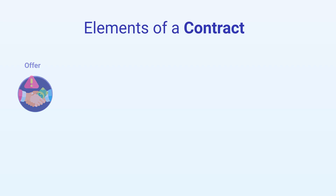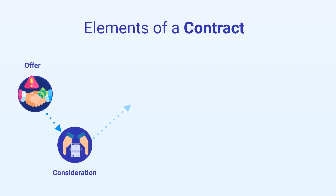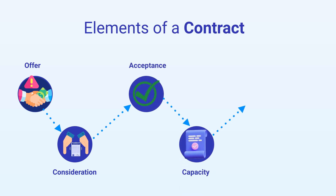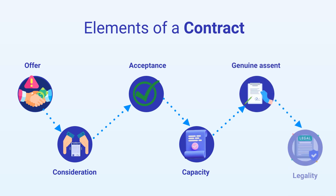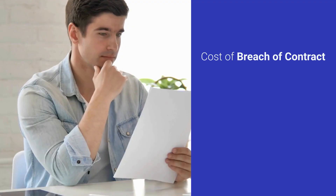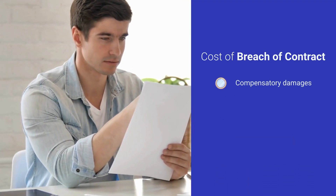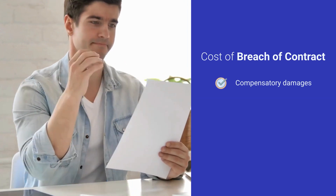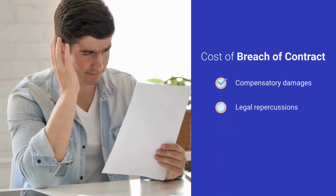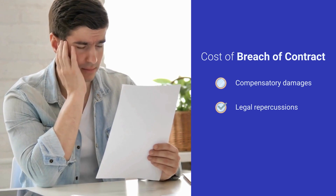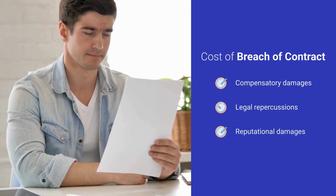However, a contract is a mutual agreement between two or more parties enforceable by law. They require an offer, acceptance, consideration, and so on to be legally valid. Sales, suppliers, and employment are all contracts businesses use for daily operations, and they can face all sorts of consequences if they fail to comply with their obligations.